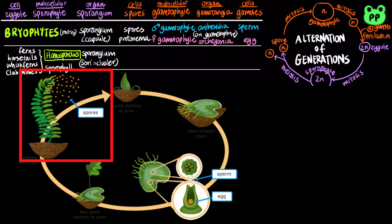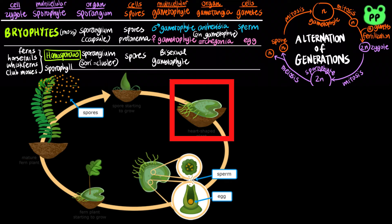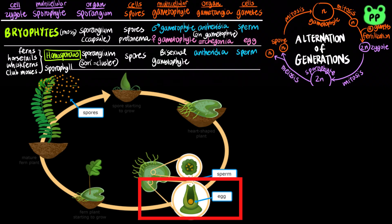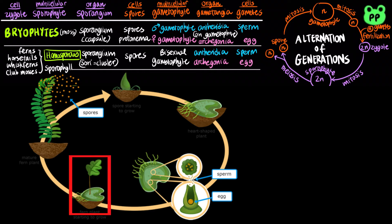The sporangium produces spores through meiosis, which develop into a bisexual gametophyte that contains both the antheridium and the archegonium. The antheridium produces sperm, whereas the archegonium produces egg. Sperm and egg fertilize to produce a diploid zygote, which gives rise to a new sporophyte.